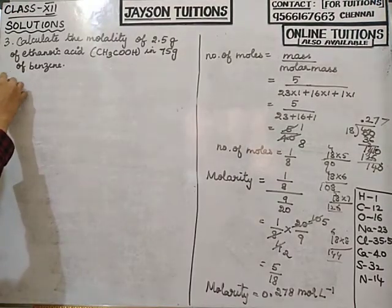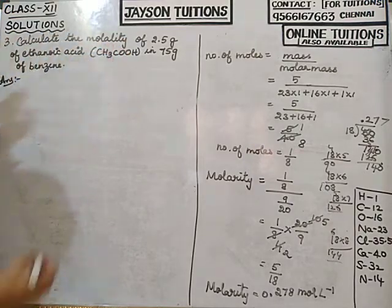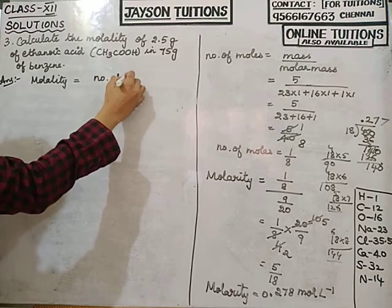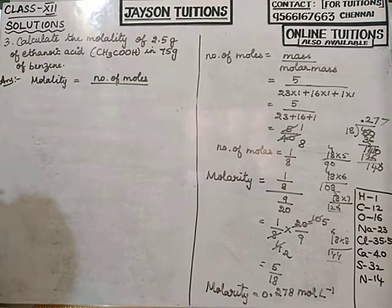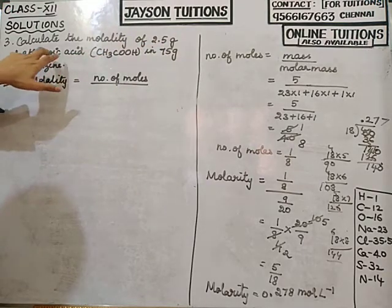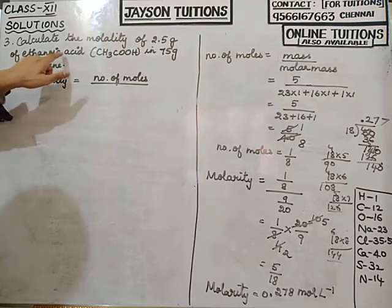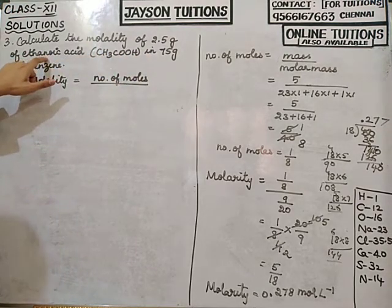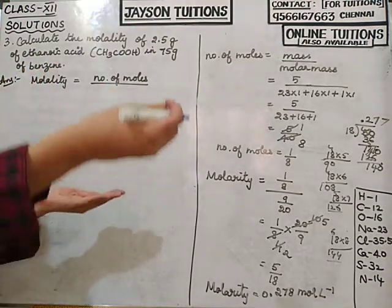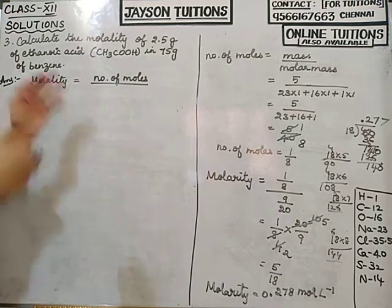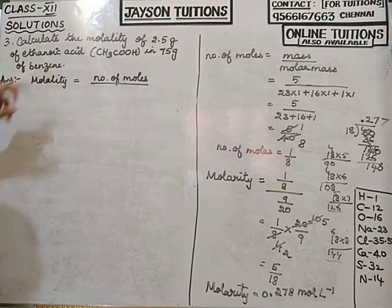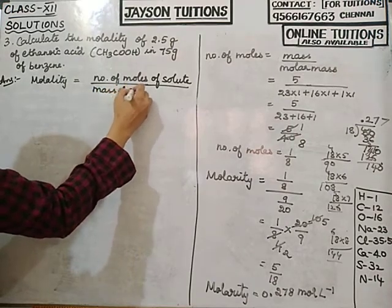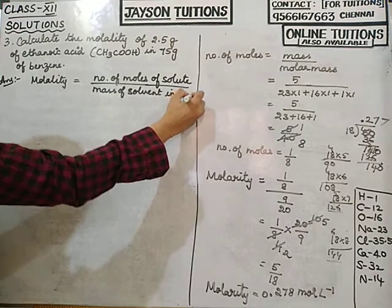Third problem: calculate the molality. The formula for molality is: molality equals number of moles of solute divided by mass of solvent in kilograms. The problem gives 2.5 grams of ethanoic acid dissolved in benzene — ethanoic acid is the solute, benzene is the solvent.